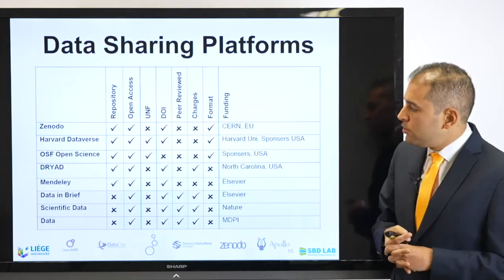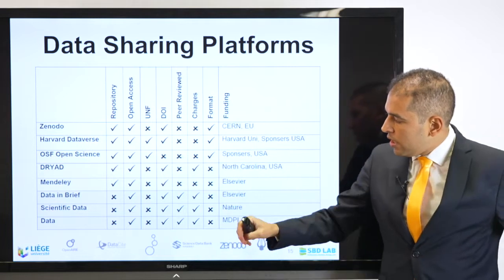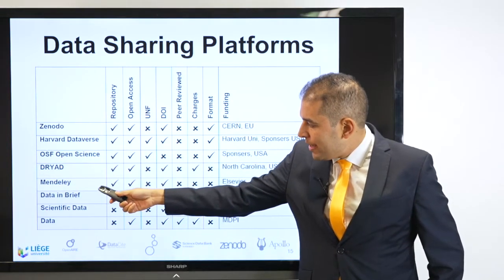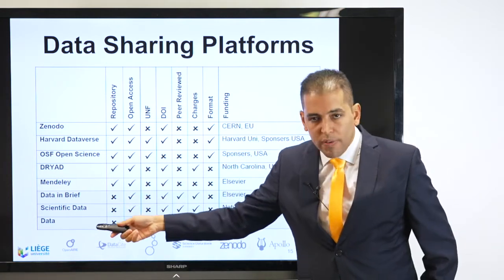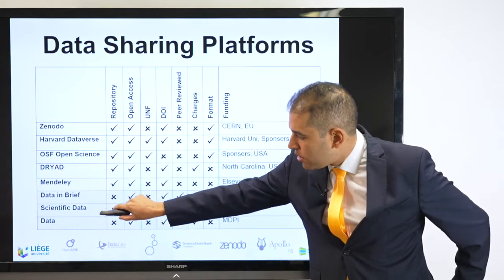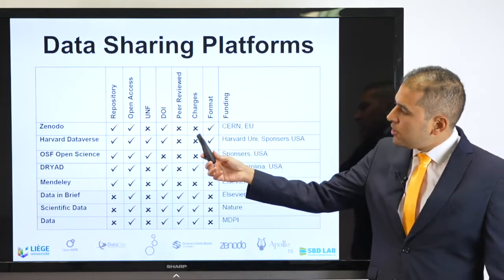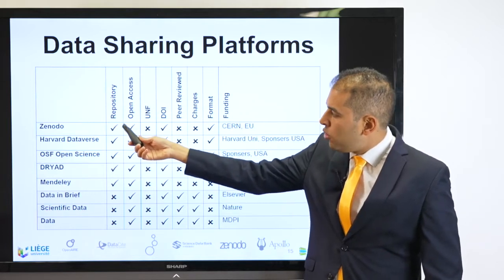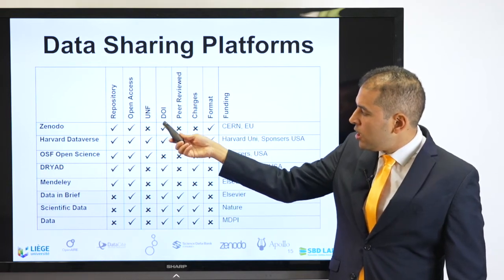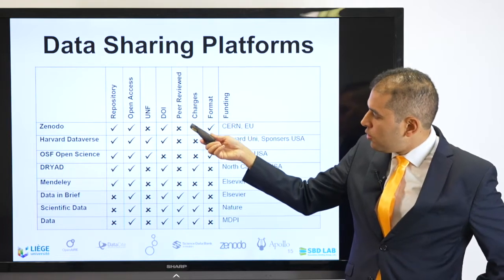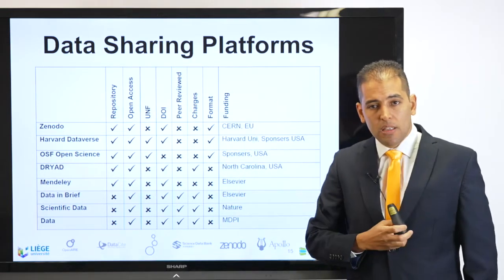Here is a table I developed that compares the different platforms — Harvard Dataverse, Zenodo, OSF, DRIAD, Mendeley — and data journals like Data in Brief, Scientific Data of Nature, and Data of MDPI. The criteria I looked at include: which is a repository, which is open access, which provides a universal numeric identification number, which has a DOI, which are peer-reviewed, which requires charges, what formats are available, and the funding behind these depositories.